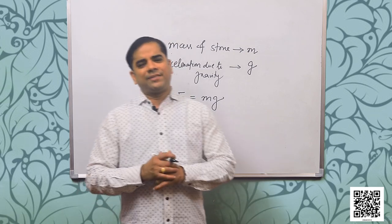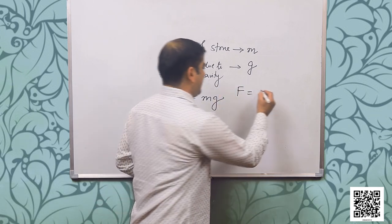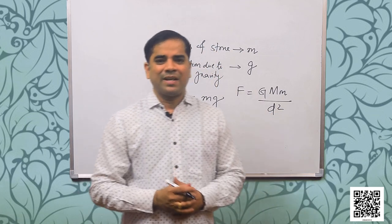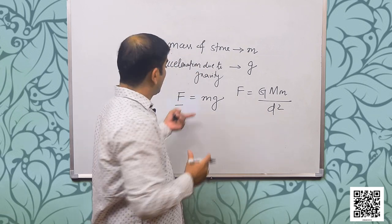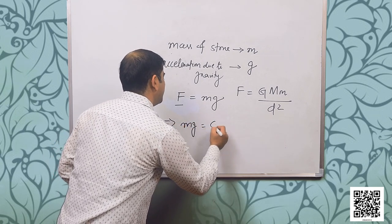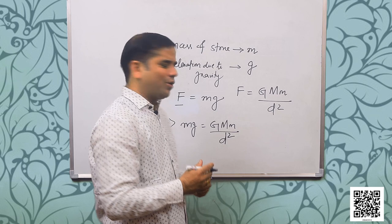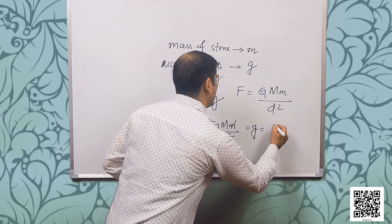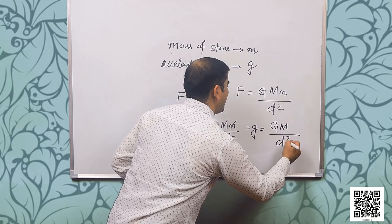Substituting the value of F, we get mg = G M m divided by d square. Cancelling out both the m's, acceleration due to gravity g = G M divided by d square, where M is the mass of the earth and d is the distance between the object and the earth.